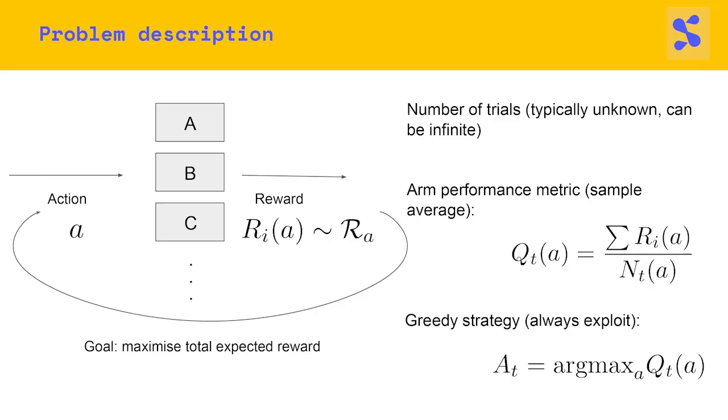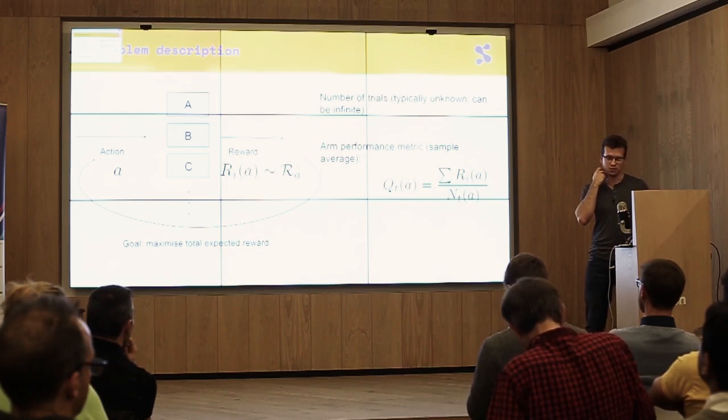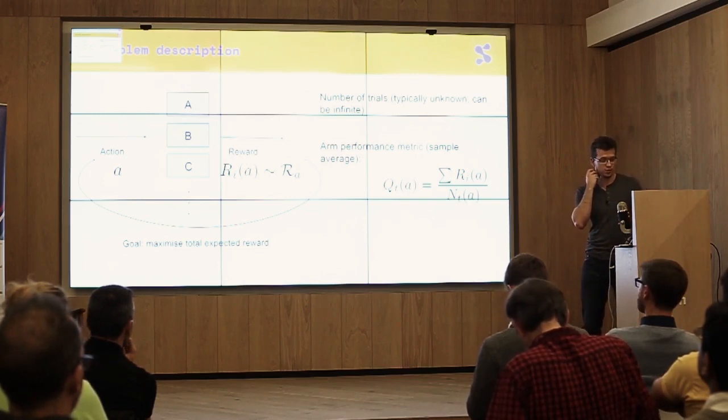So in order to do that, you need some sort of performance measure. The simplest thing you can do is you keep observing the rewards that you receive on the choices that you make, and you keep track of the sample average over time. And now you can use the sample average as a performance metric of the arm at each particular point in time. So now you can use this and come up with some sort of policies or strategies how to maximize your reward.